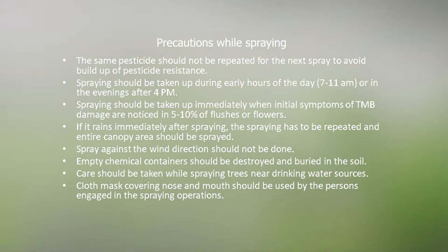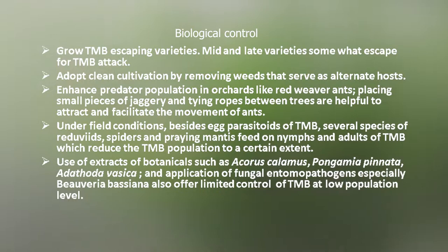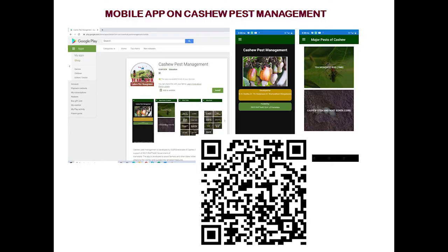Some of the major biological means of tea mosquito bug management are given here. To facilitate the identification of different pests of cashew and their management, a mobile app has been developed by ICAR-DCSR Puttur. This app can be downloaded from the Google Play Store or by scanning the QR code displayed here.